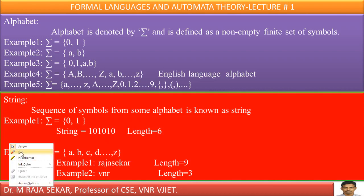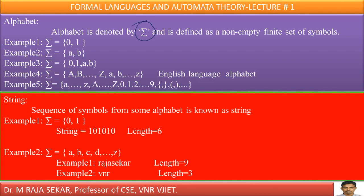What is alphabet? Alphabet is denoted by sigma. It is defined as a non-empty finite set of symbols. For example, the set {0, 1} — here 0 is a symbol and 1 is a symbol. This set is a non-empty finite set, therefore it can be treated as an alphabet. Similarly, the set {A, B} — A is a symbol, B is a symbol — this is also a non-empty finite set of symbols, therefore it is also an alphabet. The set {0, 1, A, B} is also a non-empty finite set of symbols, so it can be treated as an alphabet.